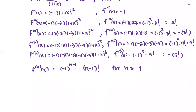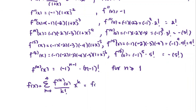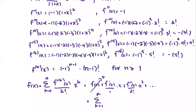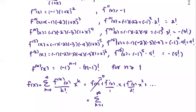For the Maclaurin series, f of x equals the summation of the k-th derivative at zero divided by k factorial times x to the power k, k from zero to infinity. Expanded, this is f at zero plus f prime at zero over one factorial times x plus f double prime at zero over two factorial times x squared and so forth. Since f at zero equals zero, we start the summation at k equals one to infinity.